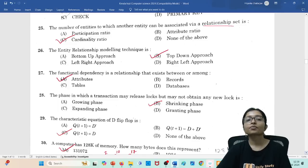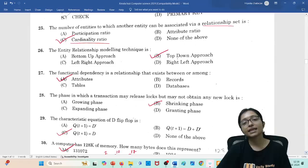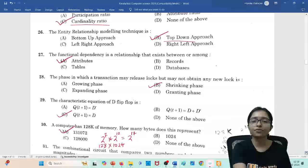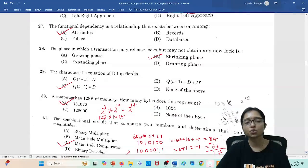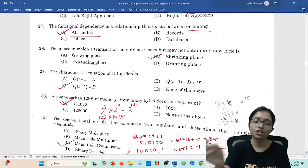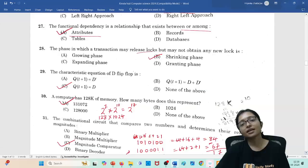The number of entities which another entity can be associated via relationship, that is cardinality ratio. The entity relationship model technique is a top-down approach. This question is not only helpful for HSST, definitely this question paper is helpful for all the students preparing for any computer science exam. The functional dependency is a relationship that exists between attributes. The phase in which the transaction may release locks but not acquire any new lock, that is shrinking phase.